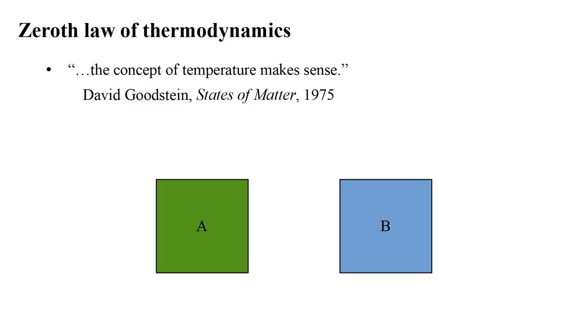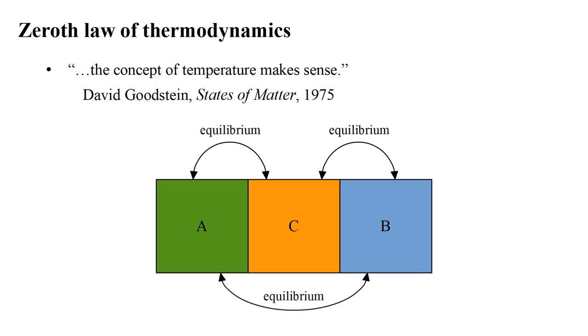Suppose we have two bodies, A and B, that are not in thermal contact. We place a third body, C, in thermal contact with both A and B, and allow them to come to thermal equilibrium, so that A and C are in equilibrium, and B and C are in equilibrium. By the zeroth law, we can conclude that bodies A and B are in equilibrium with each other, even though they are not in thermal contact.